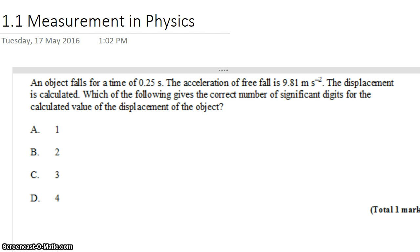We have an object that falls for a time of 0.25 seconds. The acceleration of free fall is 9.81 meters per second squared. We calculate the displacement of the object based on these pieces of information. Which one of the following gives the correct number of significant digits for the calculated value for the displacement of the object?